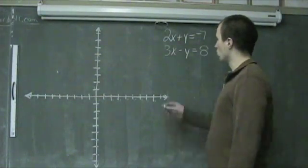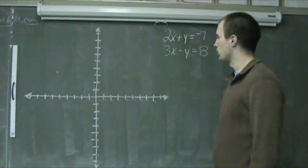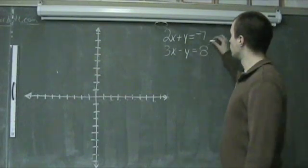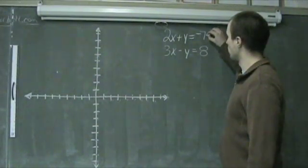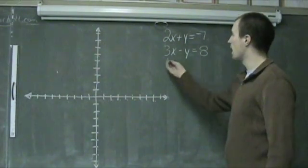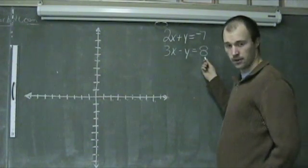Hello and welcome to graphing linear systems, or systems of linear equations. Today we're going to be graphing and finding the solution of linear systems of equations with 2x + y = -7 and 3x - y = 8.